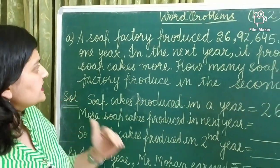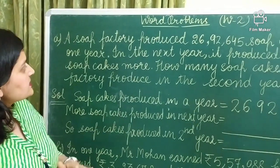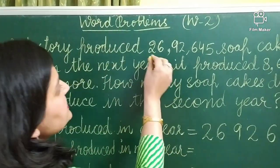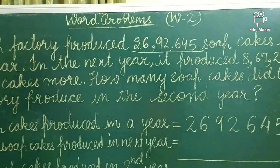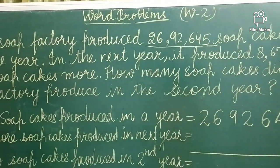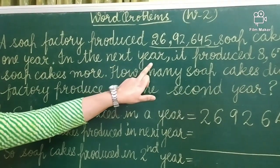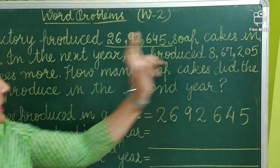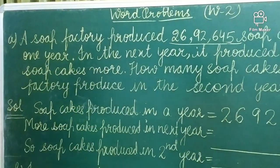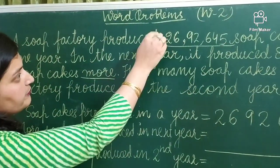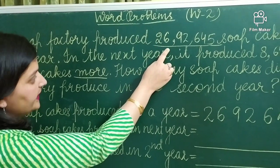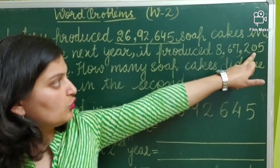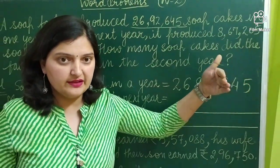Now, what is given in the question? The factory produced 26,92,645 soap cakes in a year, and next year it produces 8,67,205 soap cakes more. That means, whatever it produced in the first year, it is producing 8,67,205 soap cakes more than that.